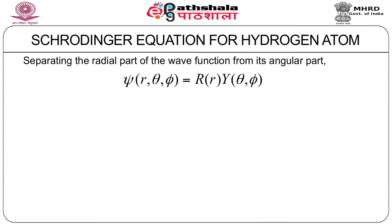The total wave function, which is a function of r, θ, φ, can always be written as a product of a radial wave function R(r) and the angular wave function Y(θ, φ). In the case of rigid rotator, r was constant, so we only had Y(θ, φ). But here all of r, θ, and φ vary because this is a real three-dimensional problem, and the radial part comes as a component of the total wave function.